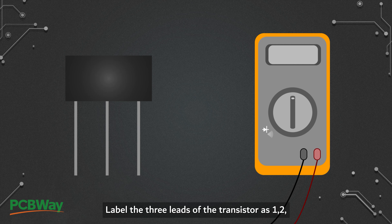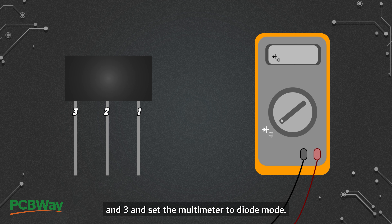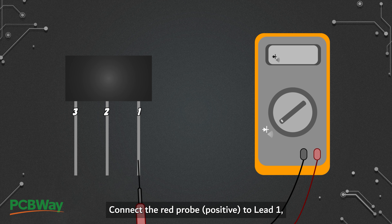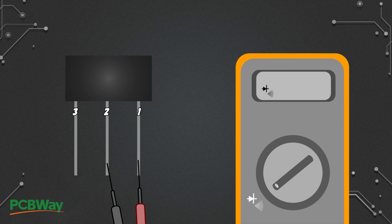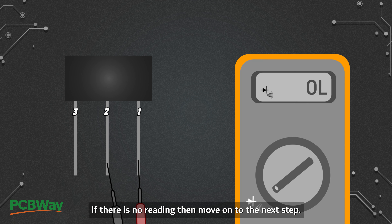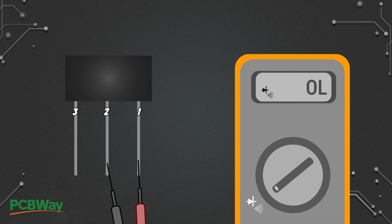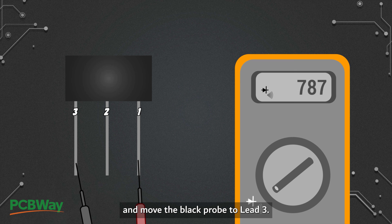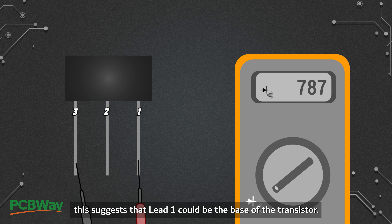Preparation: Label the three leads of the transistor as 1, 2, and 3, and set the multimeter to diode mode. Step 1: Connect the red probe to lead 1 and the black probe to lead 2. If there is no reading, move on to the next step. Step 2: Keep the red probe on lead 1 and move the black probe to lead 3. If there is a reading on the multimeter, this suggests that lead 1 could be the base of the transistor.